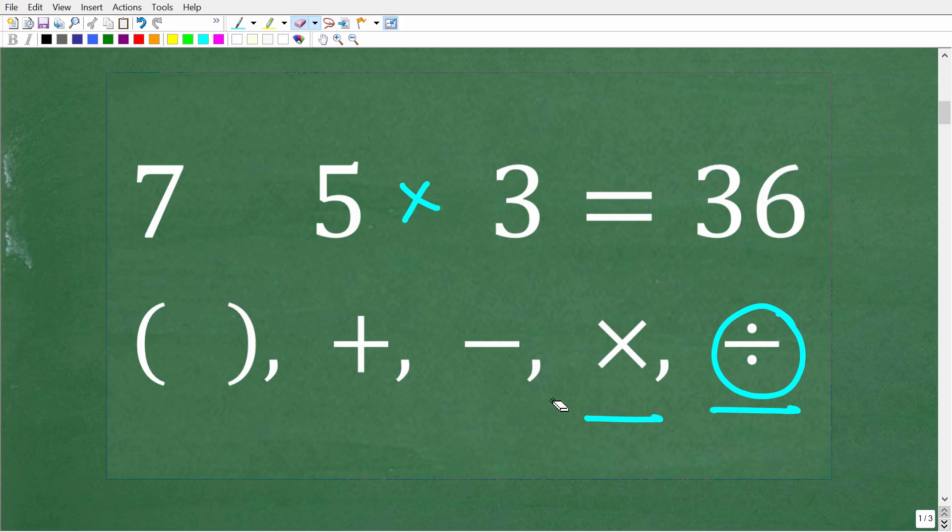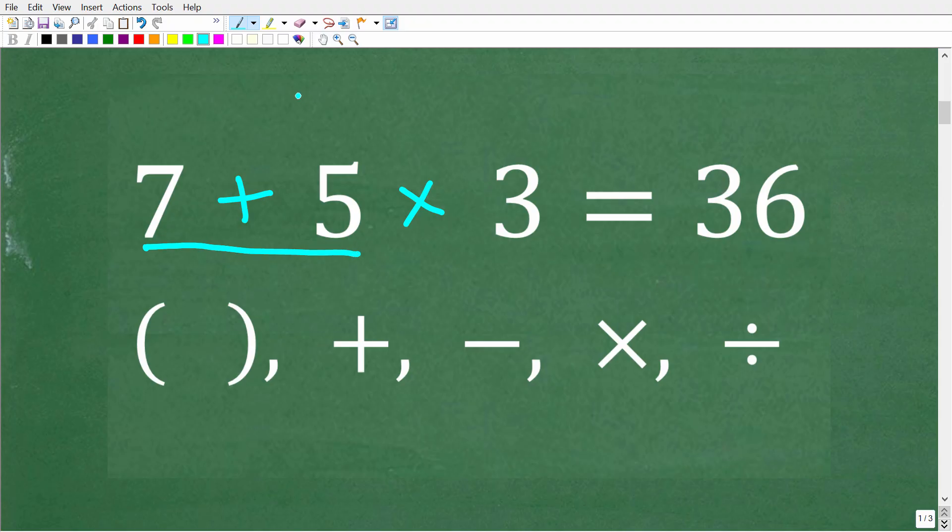But hopefully, eventually, some of you might be saying, well, let's see here. Maybe if I add these numbers together and then multiply, we can get the answer. So maybe 7 plus 5 is going to be 12. And 12 times 3 is 36.